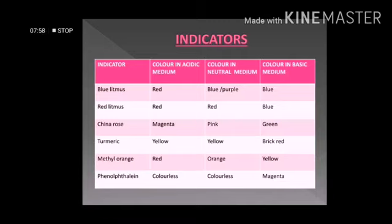China rose solution is pink in color; it changes to green when it reacts with a base and changes to magenta in the presence of an acid. Turmeric is yellow in color; it does not show a color change in an acidic medium, but it changes to brick red when it reacts with a basic solution.